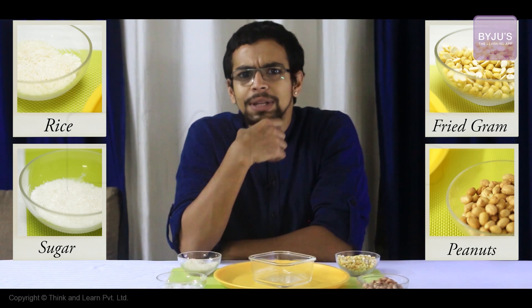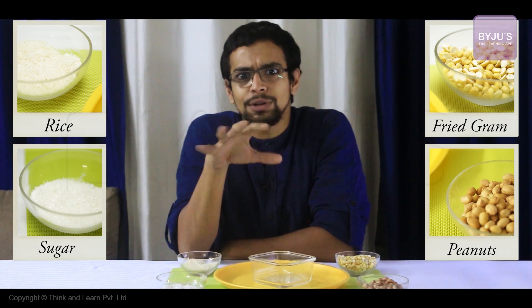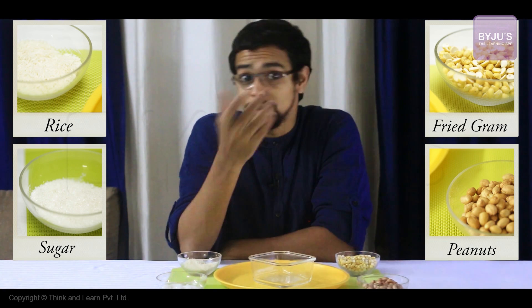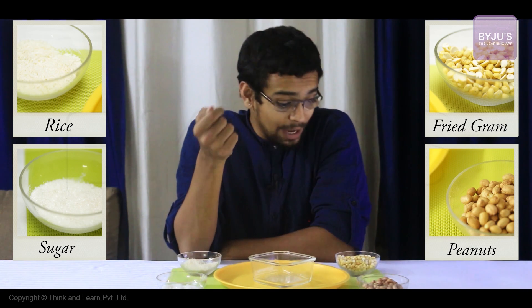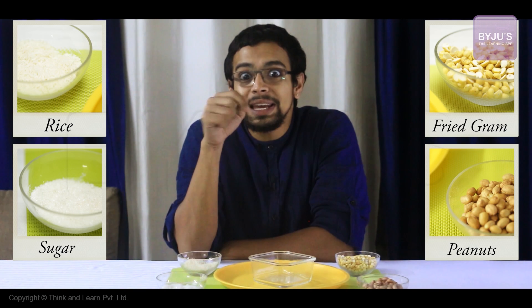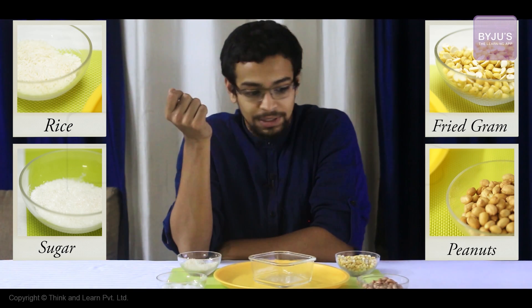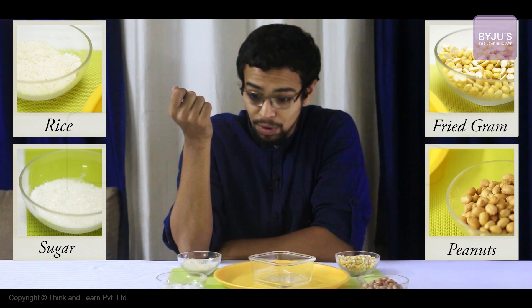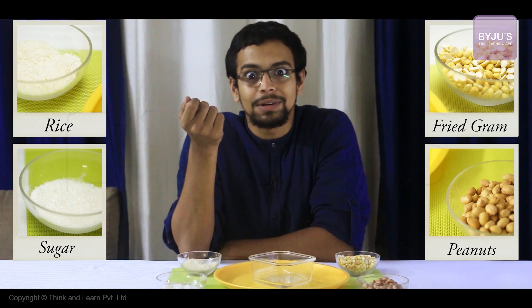Now when I said all these names, how is it that you were able to recognize all of the visuals or the images that you saw? That's because you have seen them before — most likely, you've seen them before and you were able to identify different patterns made by the shapes and colors in each one of them, that told you that this is not rice but is sugar, that this is not sugar but is a groundnut.